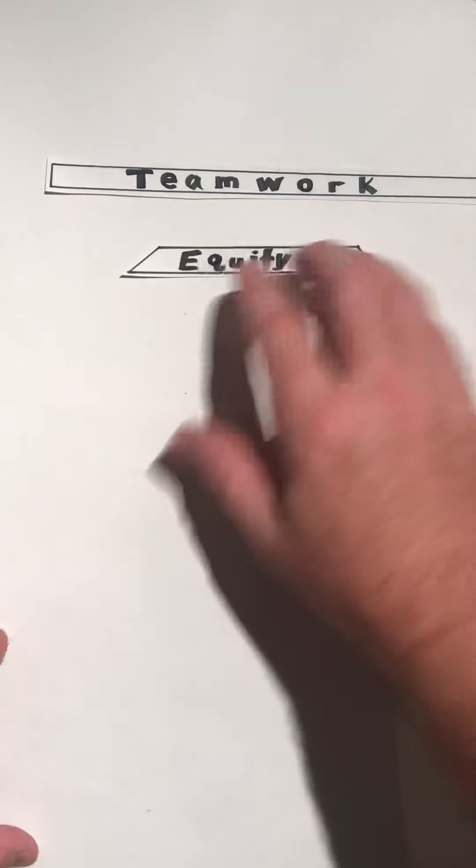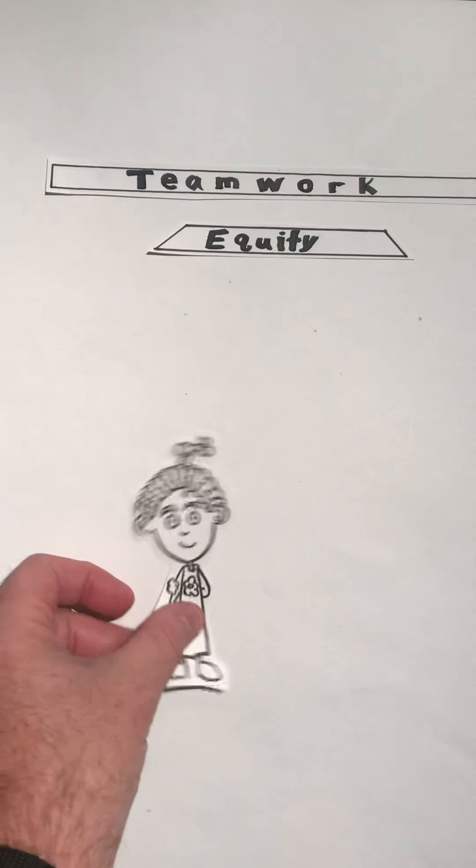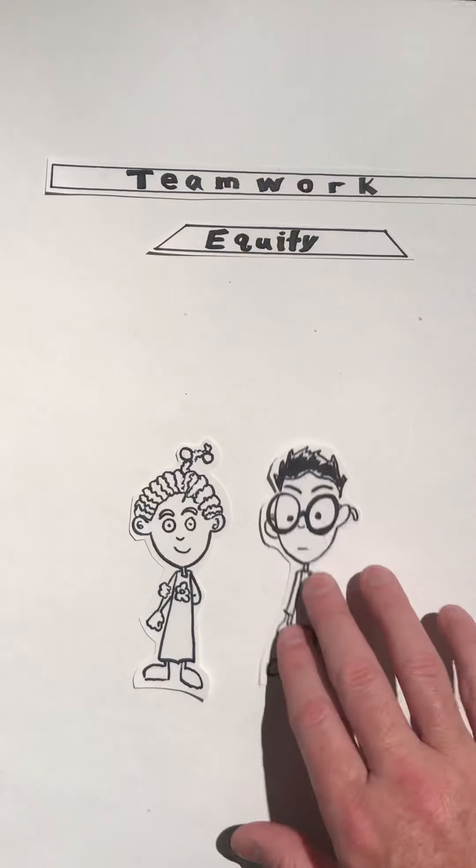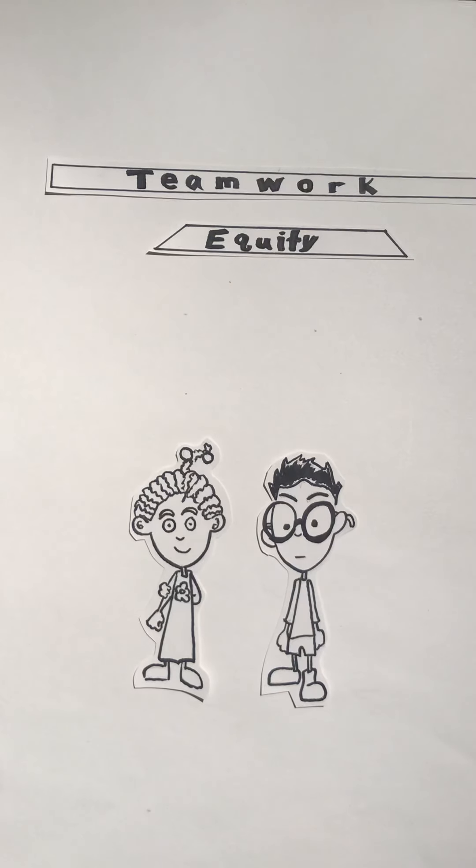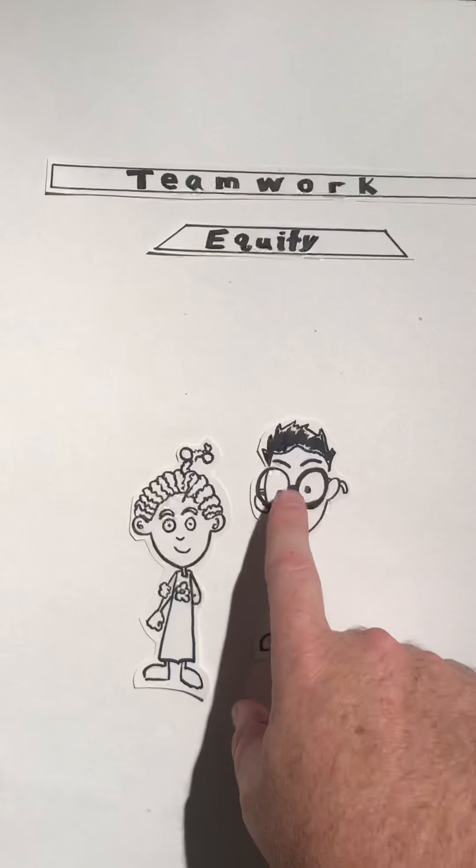There's another important ingredient to understand. It's called equity. Let me explain equity. Here we got Marissa, and I got Josh. They're in the same class. But look at this, Josh gets to wear glasses. Why do you think Josh wears those glasses? Oh, I see. So you're saying because he needs them to see. He can't see good without his glasses.